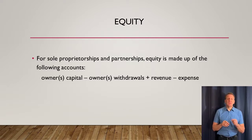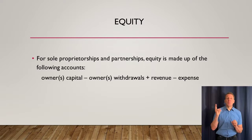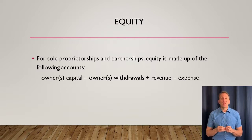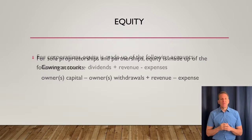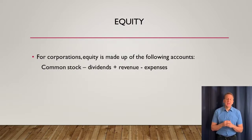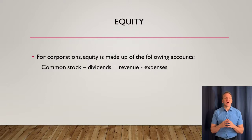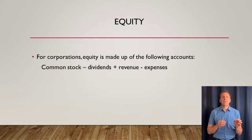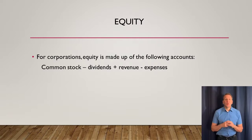For a sole proprietorship there would be one owner's capital account and one withdrawal account. If it's a partnership with two or more partners, you'll have multiple capital accounts and multiple withdrawal accounts because each owner has their own. For a corporation, instead of a capital account we start with common stock — those are shares of the business. The withdrawal part is called dividends. So it's plus common stock minus dividends plus revenues minus expenses. Those are the accounts you'll see under equity for a corporation.